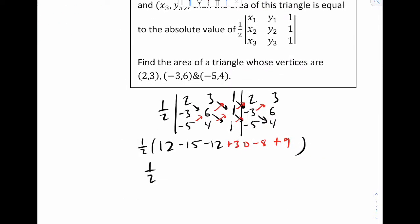Okay, so one half, let's work this out. I can see the 12 will cancel. That's going to make 15 minus 8 plus 9 - that's 16.